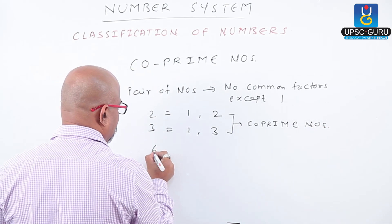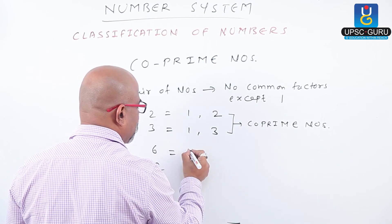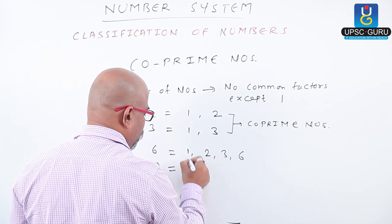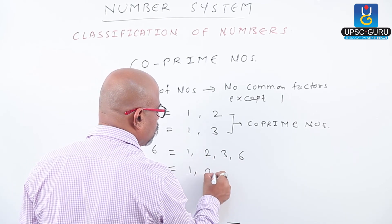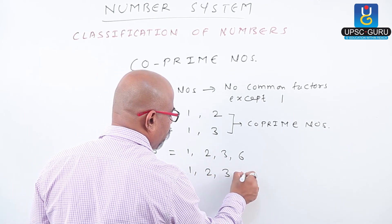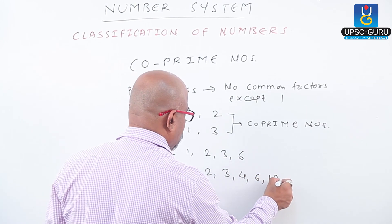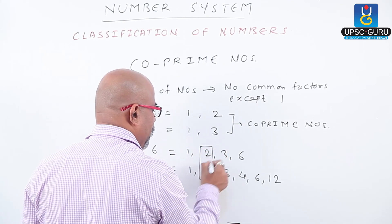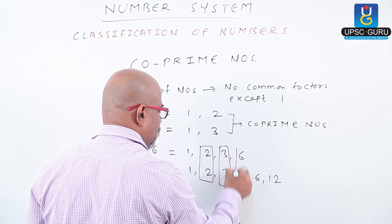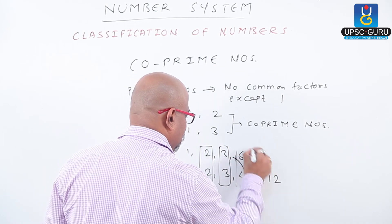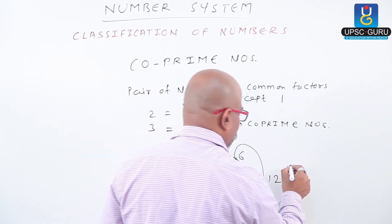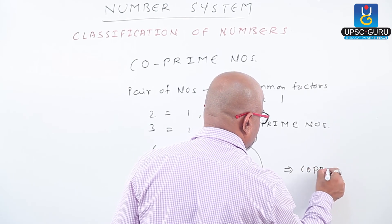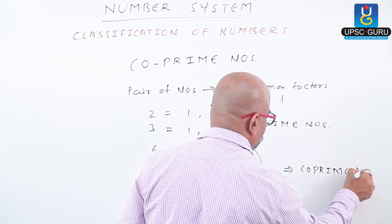If we check 6 and 12: factors of 6 are 1, 2, 3, and 6 itself. Factors of 12 are 1, 2, 3, 4, 6, and 12. Here we observe that other than 1, the numbers 2, 3, and 6 are all common factors. Therefore, this is not a pair of co-prime numbers.